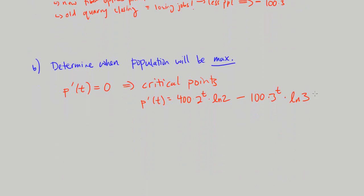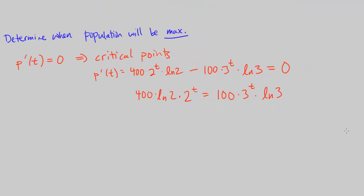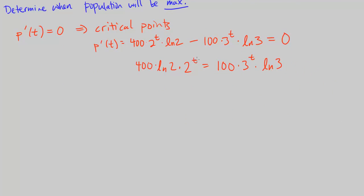So that's the derivative and we want to set this equal to 0 and then solve for t. So let's go ahead and solve this. Once this is equal to 0, we can go ahead and move this to the other side and we can get 400 times 2 to the, let's combine 400 and ln, so this is going to be 400 times ln of 2 times 2 to the t equals to 100 times 3 to the t times ln of 3.